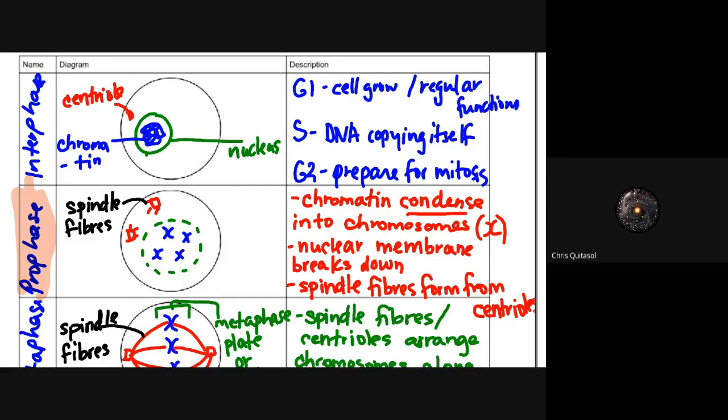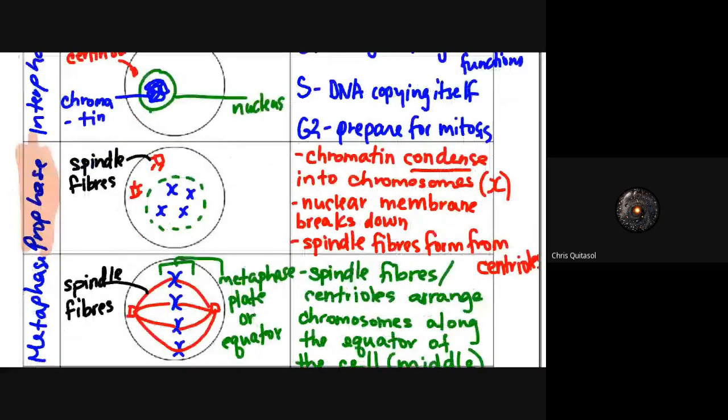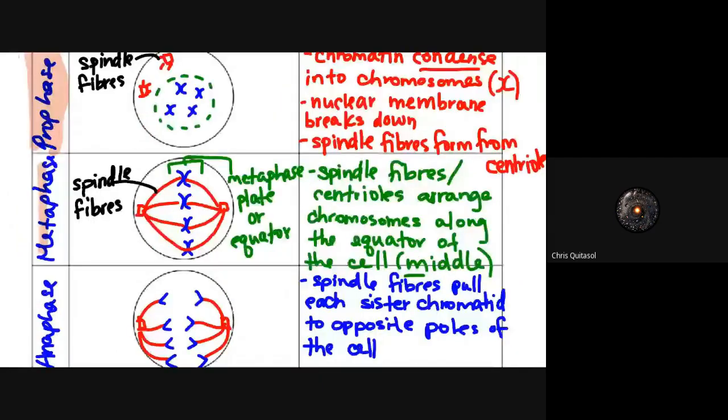In metaphase, the spindle fibers attach to those centrioles and arrange the chromosomes along the equator, right smack dab in the middle. You want to get equal amounts of genetic information into each daughter cell - the offspring of that cell needs to have the same DNA as the parent cell. So it takes those copied DNA pieces and lines them all up in the middle - that's what happens in metaphase.